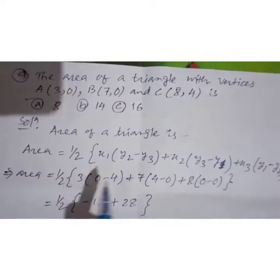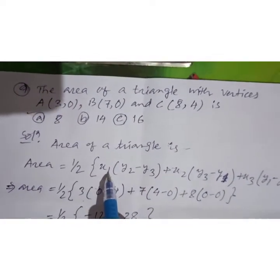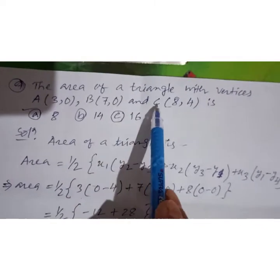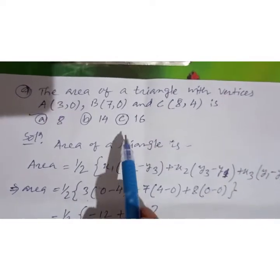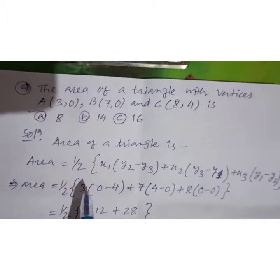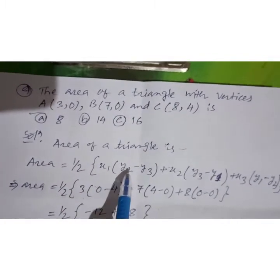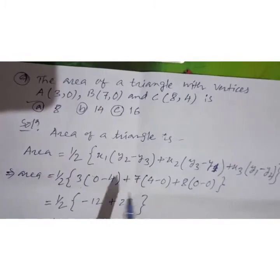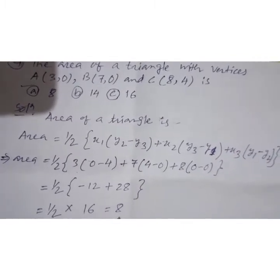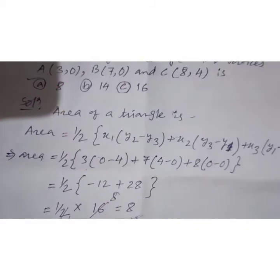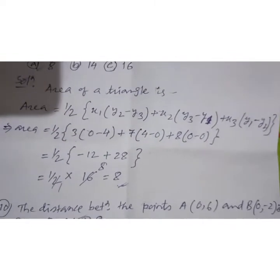Using the area of triangle formula: area equals one-half times |x1(y2-y3) + x2(y3-y1) + x3(y1-y2)|. Comparing: x1=3, y1=0, x2=7, y2=0, x3=8, y3=4. Substituting these values and simplifying gives an area of 8 square units. Please check this solution once more to confirm the correct option.